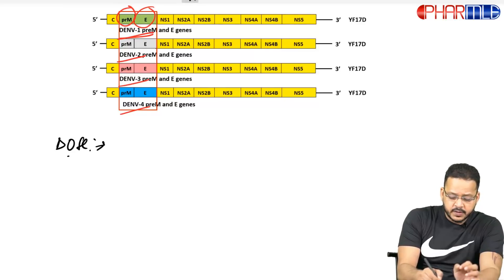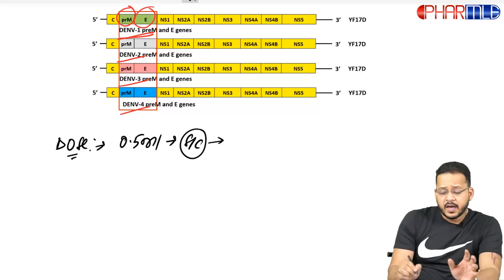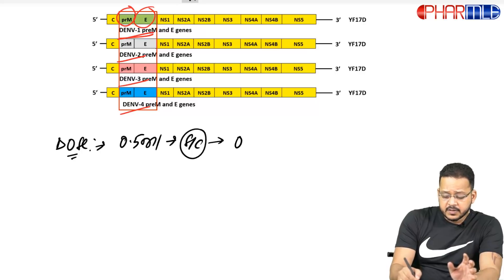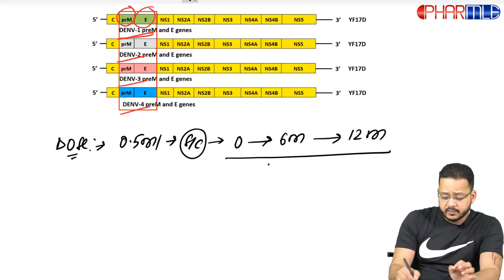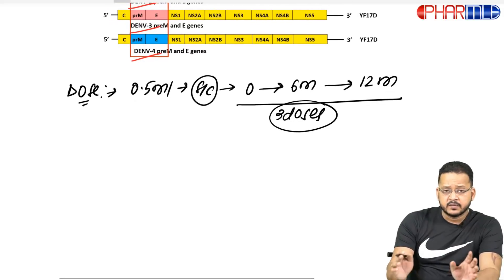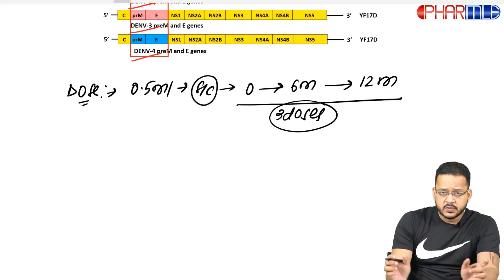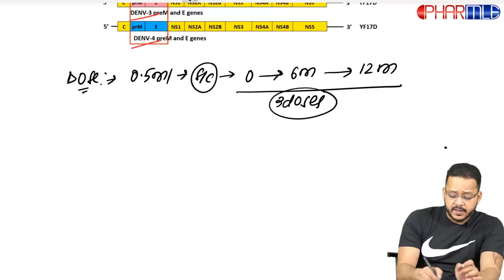Coming to the dosing of the dengue vaccine: 0.5 ml is given by subcutaneous route. The first dose is given, then after six months the second dose is given, then after 12 months the third dose is given. So three doses of this vaccine are given at intervals of six months each.